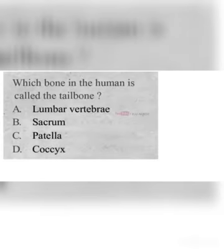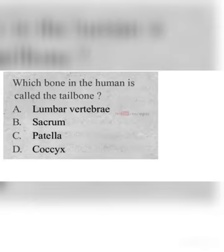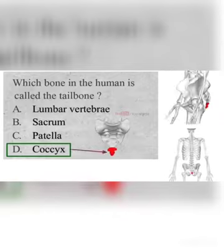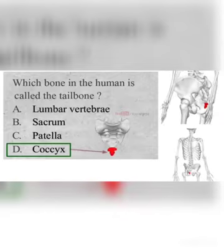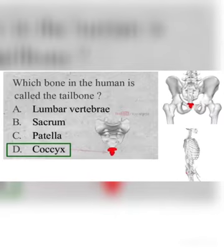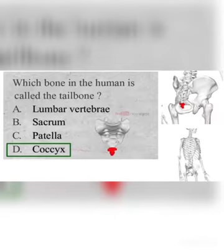Which bone is the human vestigial tailbone? A. Lumbar vertebrae, B. Sacrum, C. Patella, D. Coccyx. The correct answer is D. Coccyx. The coccyx bone is the human vestigial tailbone.